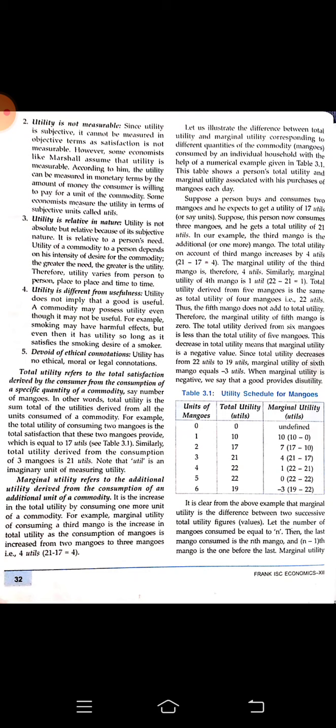Marginal utility means with the addition of every unit of the commodity, the utility we get. For the first mango, the marginal utility is 10. For the second mango — not consuming 2 mangoes total, but the second individual mango — he got a utility of 7. The marginal utility of the third mango is 4, the fourth is 1, the fifth is 0, and the marginal utility of the sixth mango is minus 3.